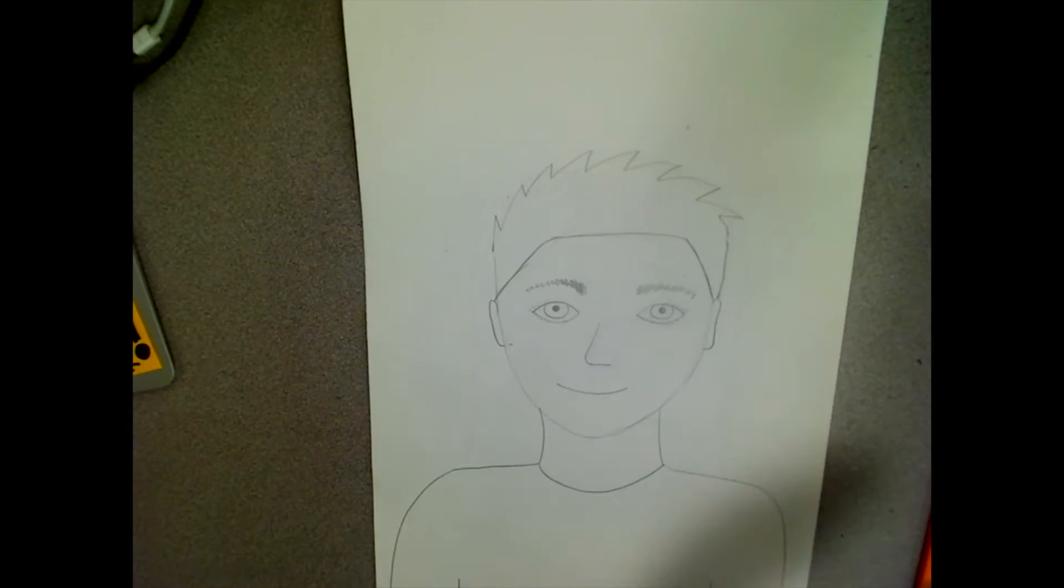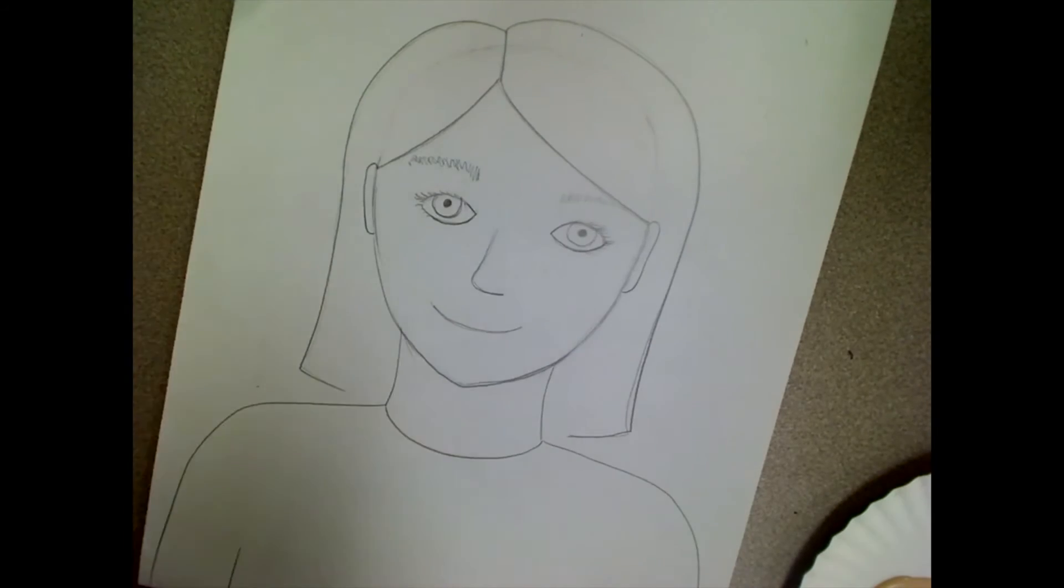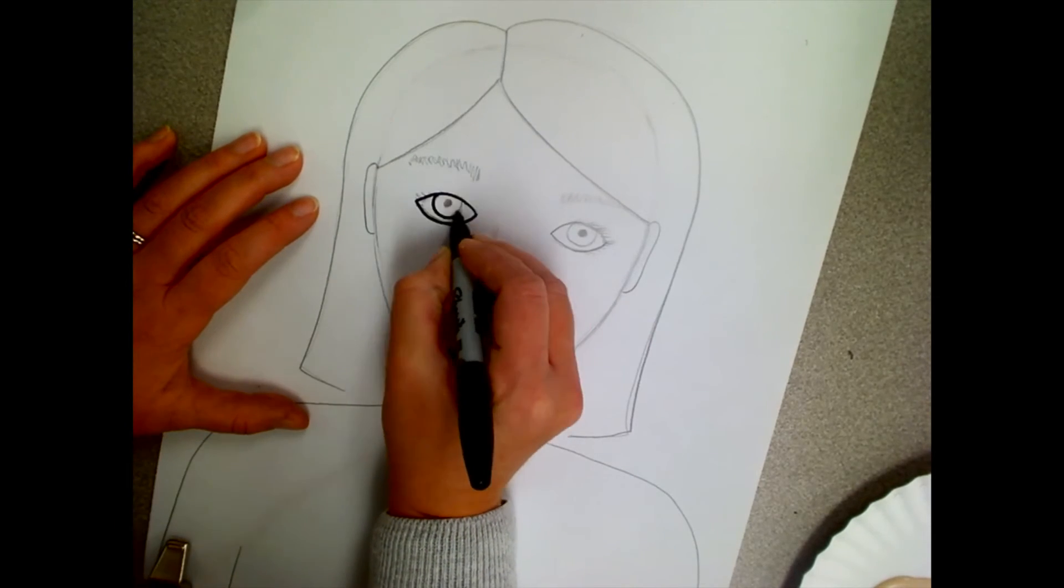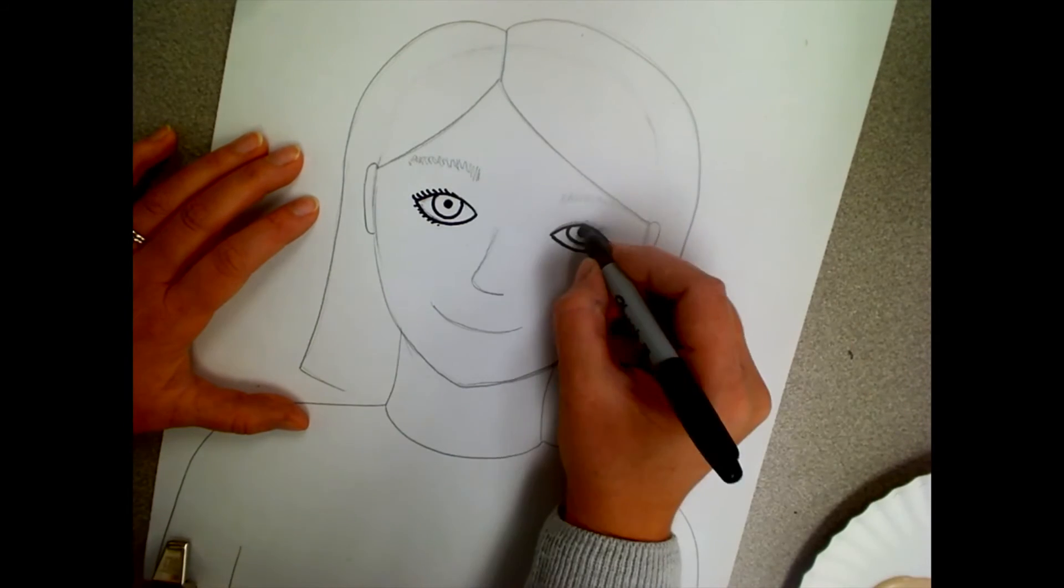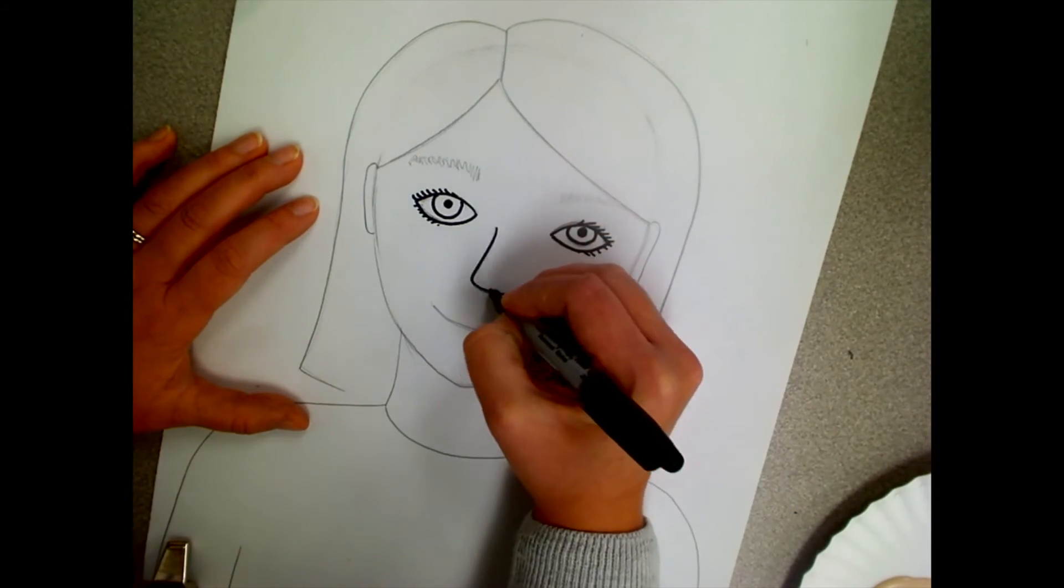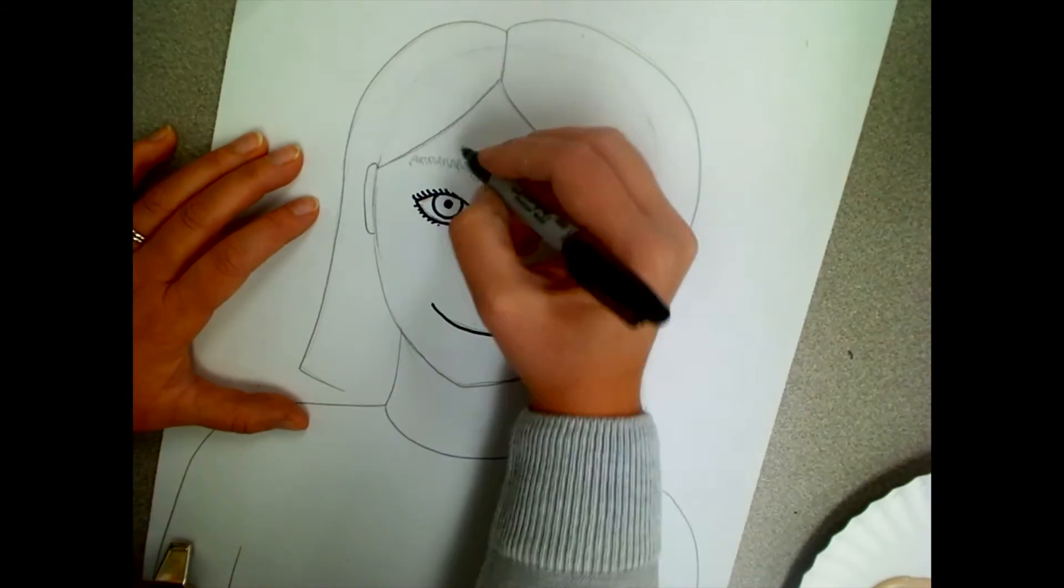Once you've completed drawing your portrait, your teacher might want to check it before you start using your Sharpie. Sometimes it's easy to forget to add ears or a nose, so make sure you check with your teacher before you start doing the Sharpie part.